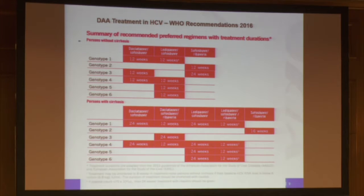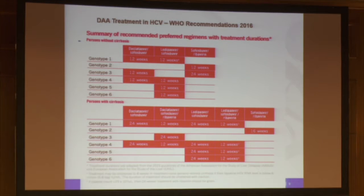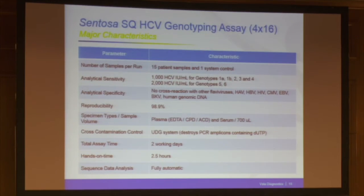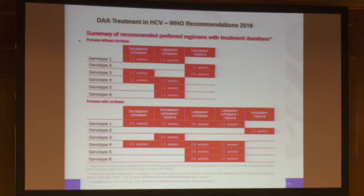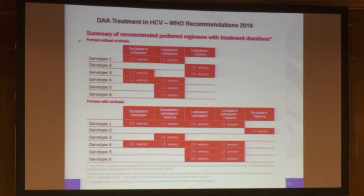This reinforces the statement that you still need genotyping for steering and monitoring of disease. This shows WHO recommendations with different drugs on the market. The point is that all drug combinations and iteration are determined by genotype. So accurate genotyping is absolutely essential for choosing the right drug, even with the new agents.